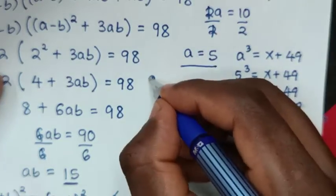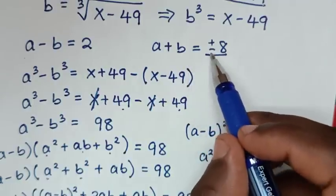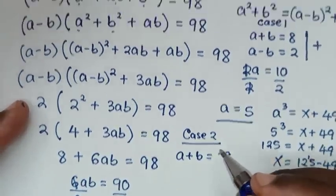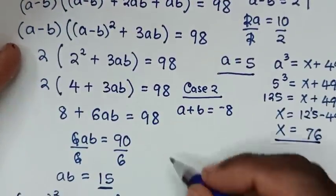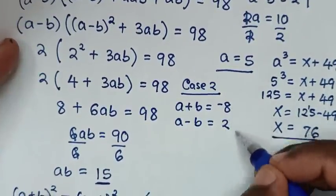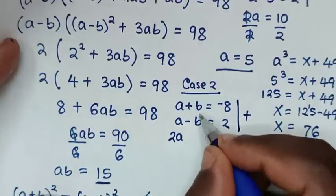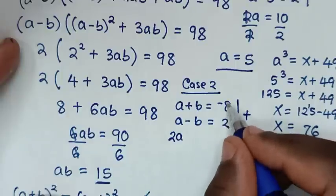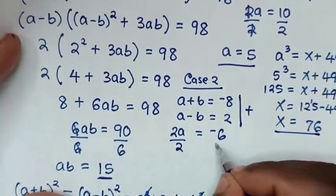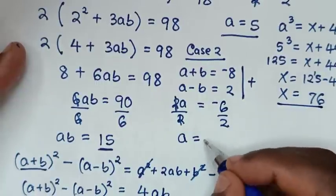For Case 2, we take a + b = -8 and compare with a - b = 2. Adding these two equations by elimination: 2a = -8 + 2 = -6. Dividing by 2, a = -3.